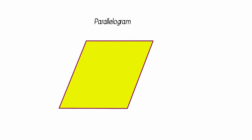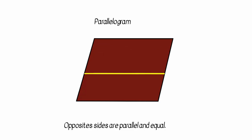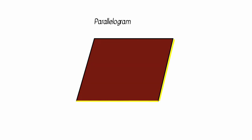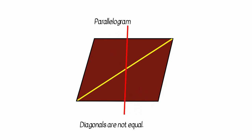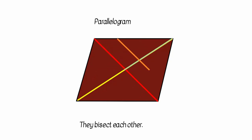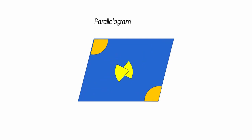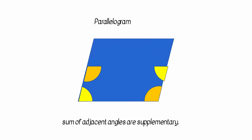If opposite sides of a trapezium become equal and parallel, we get a parallelogram. Hence in a parallelogram, opposite sides are parallel and equal. Diagonals are not equal, but they bisect each other. Opposite angles are equal, and the sum of any two adjacent angles is 180 degrees.